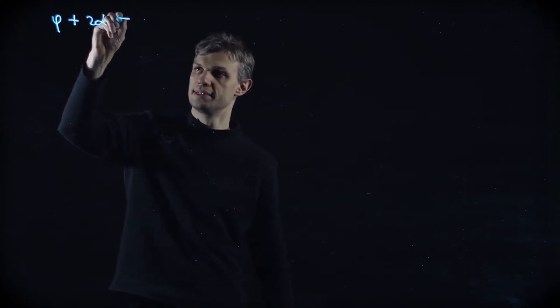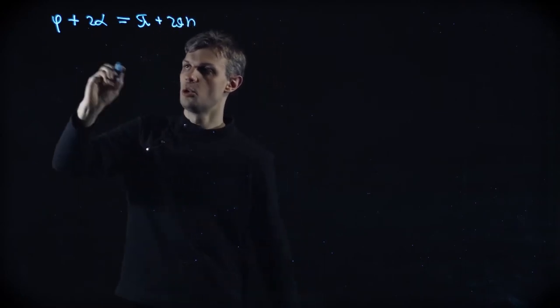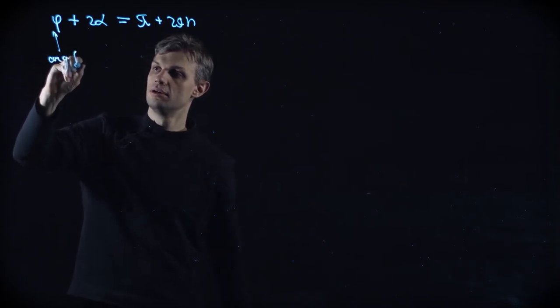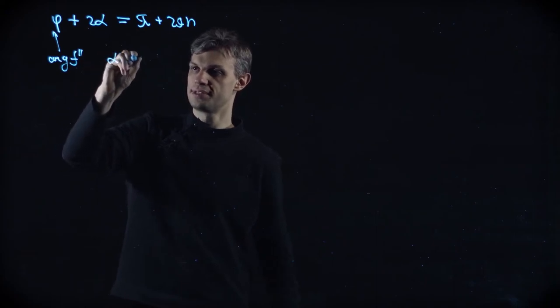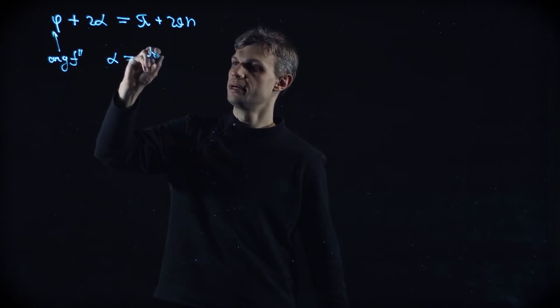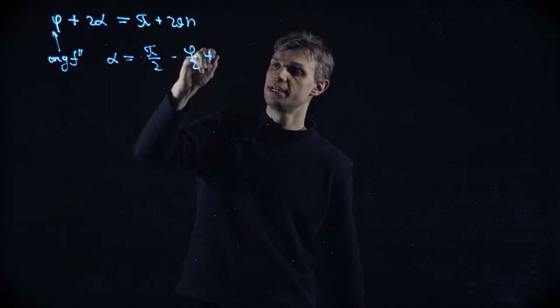Now, let's actually write down what we got. So here is our equation for the steepest descent direction. So where phi is the argument of the second derivative, and alpha is the angle which fixes our direction. So alpha is equal to pi by 2 minus phi by 2 plus pi n.